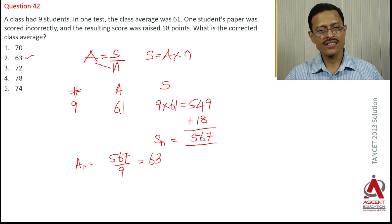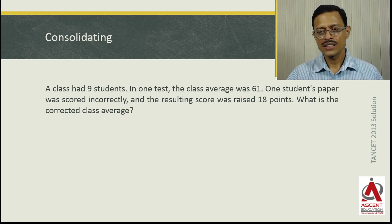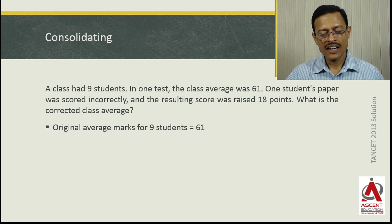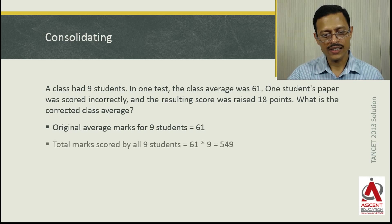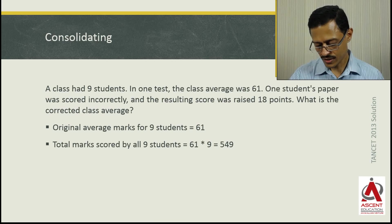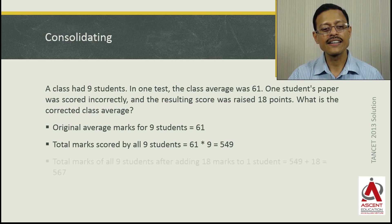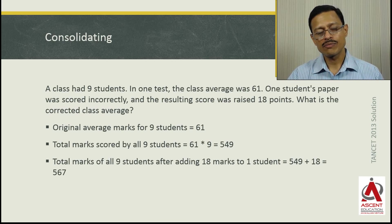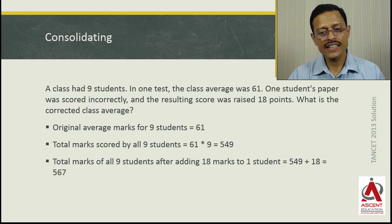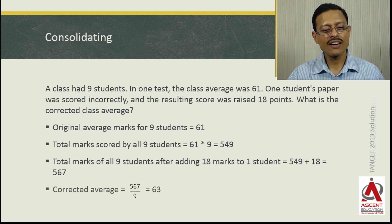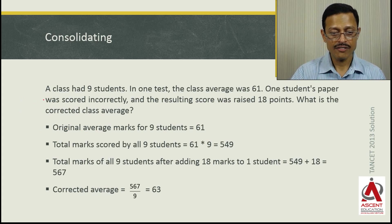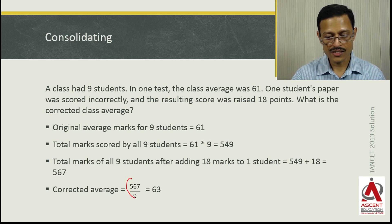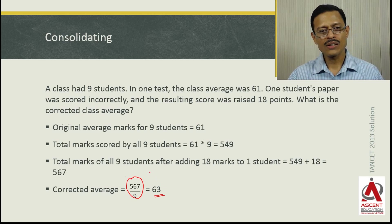To consolidate: average marks for 9 students was 61, so total marks for all 9 students was 549. It is increased by 18 marks, so the new total is 567. The new average is 567 divided by 9, which is equal to 63.